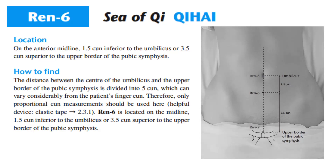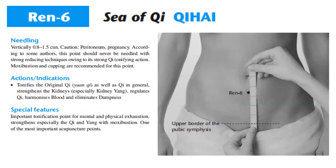A helpful device is an elastic tape. REN6 is located on the midline, 1.5 cun inferior to the umbilicus, or 3.5 cun superior to the upper border of the pubic symphysis. Needling: vertically, 0.8 to 1.5 cun. Caution should be observed regarding the peritoneum and in pregnancy. According to some authors, this point should never be needled with strong reducing techniques owing to its strong qi tonifying action.